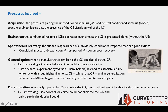The opposite process of generalization is discrimination. Discrimination occurs when only a very specific stimulus can elicit the conditioned response — similar stimuli won't be able to elicit the same response. For example, if a doorbell, chime, or similar noise could not elicit the conditioned response for Pavlov's dog and only that specific bell could, that would be an example of discrimination.